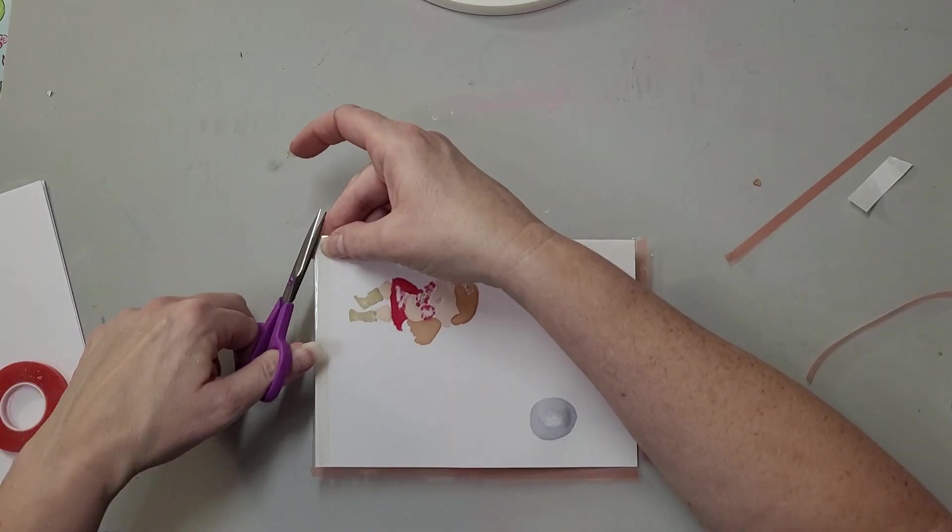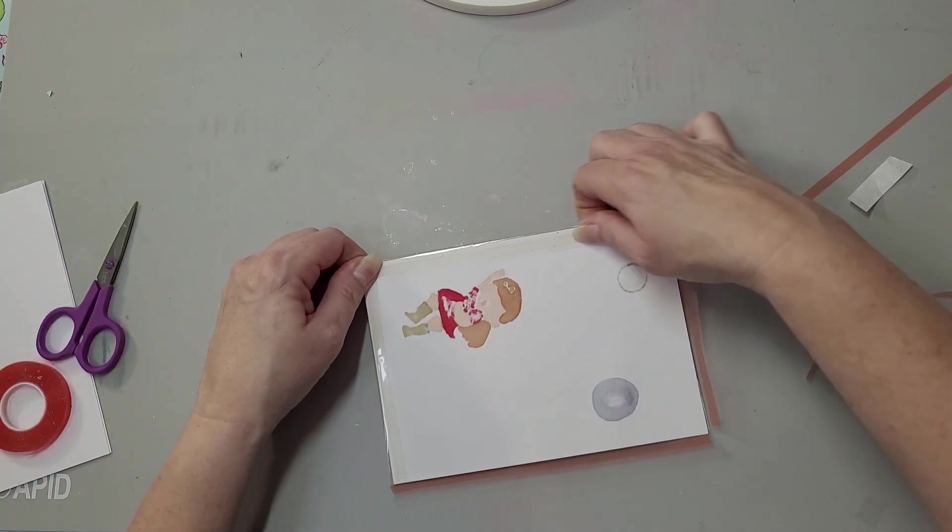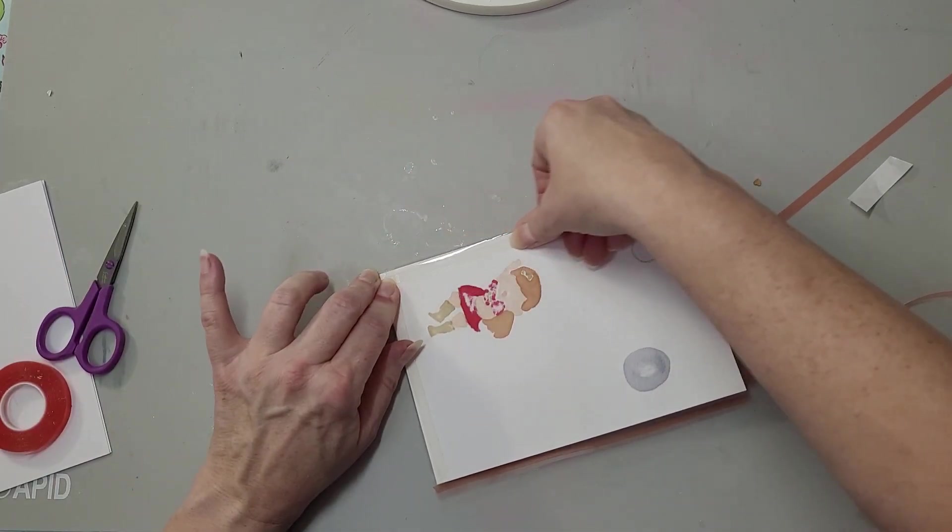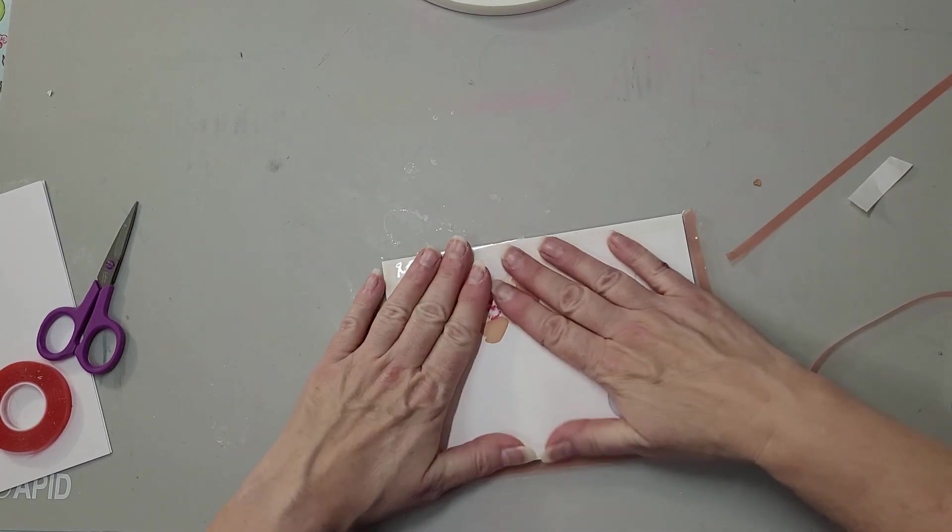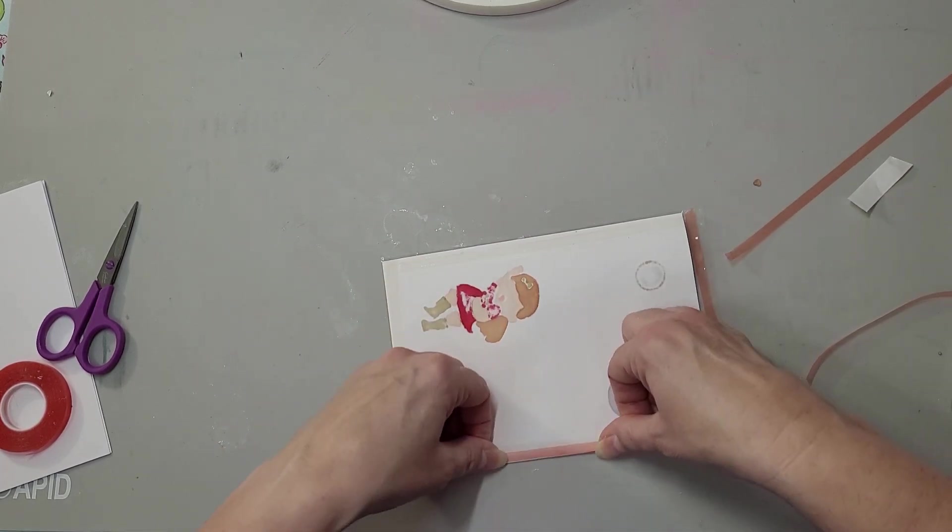And I'm going to attach this side. That looks like I missed a little piece there so I'm going to cut that off.